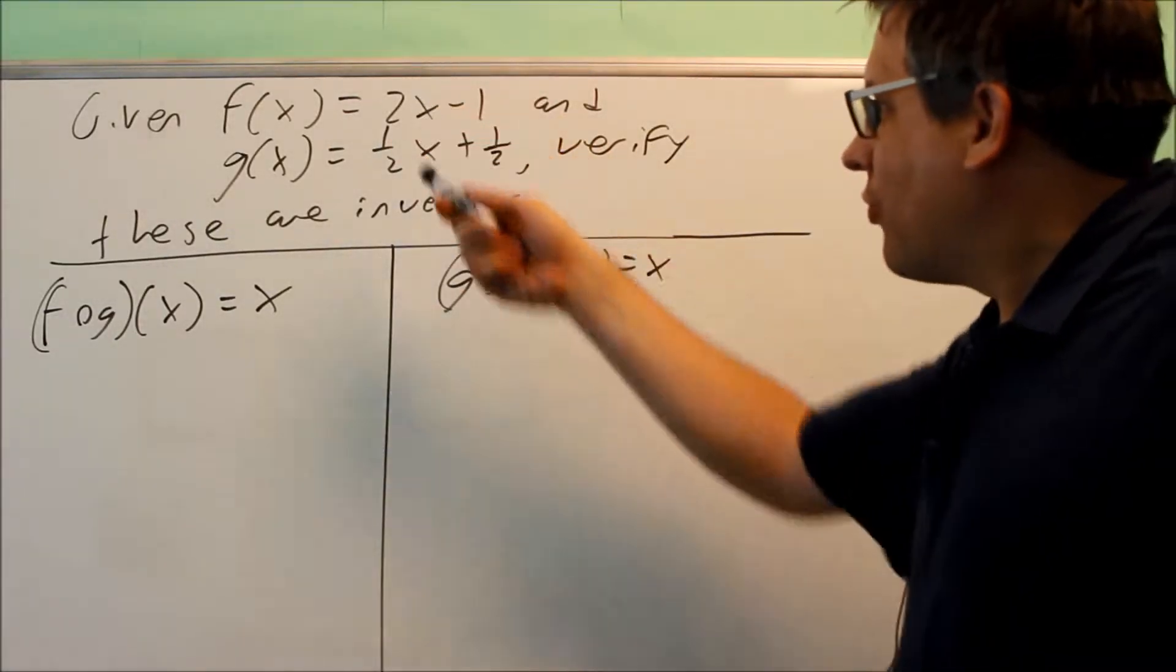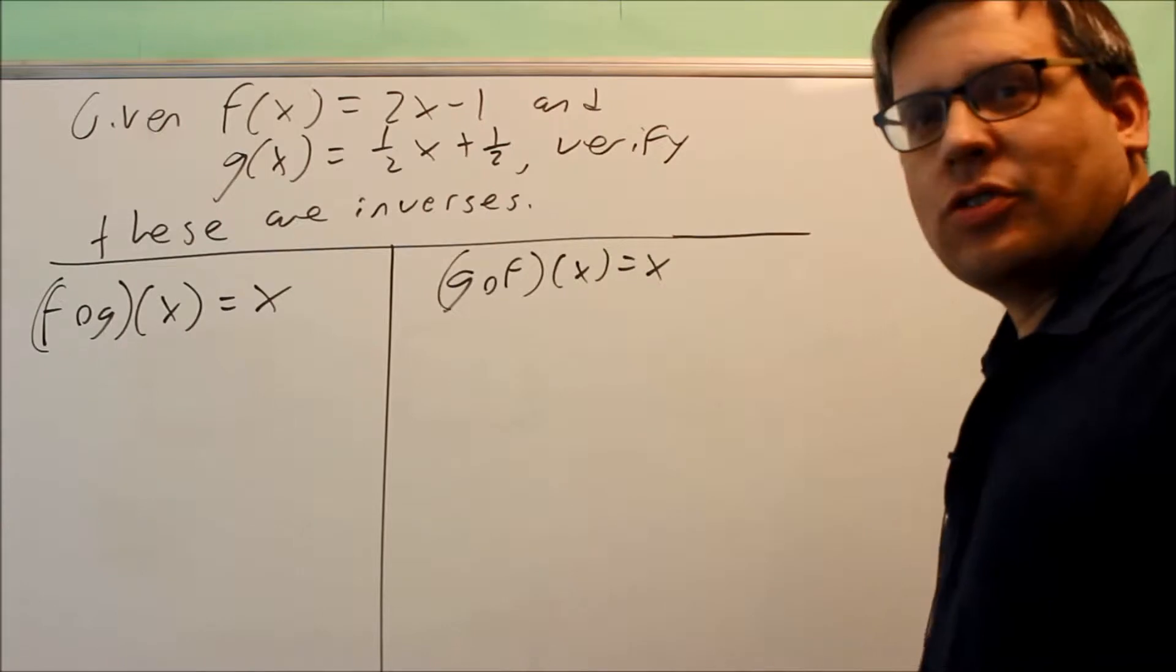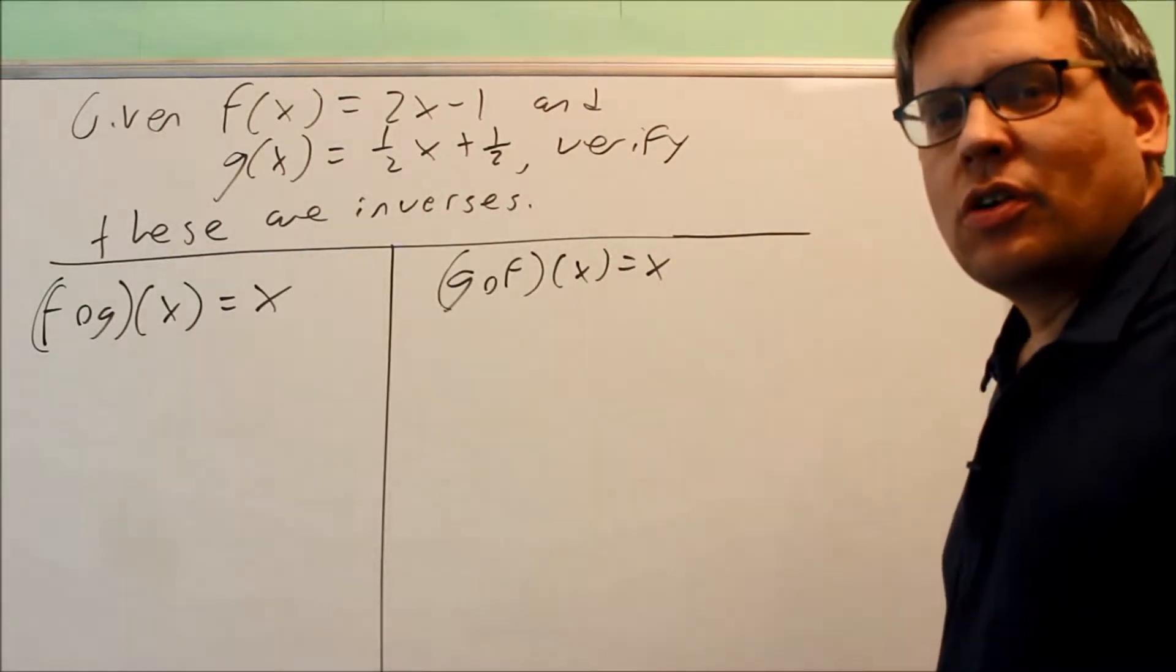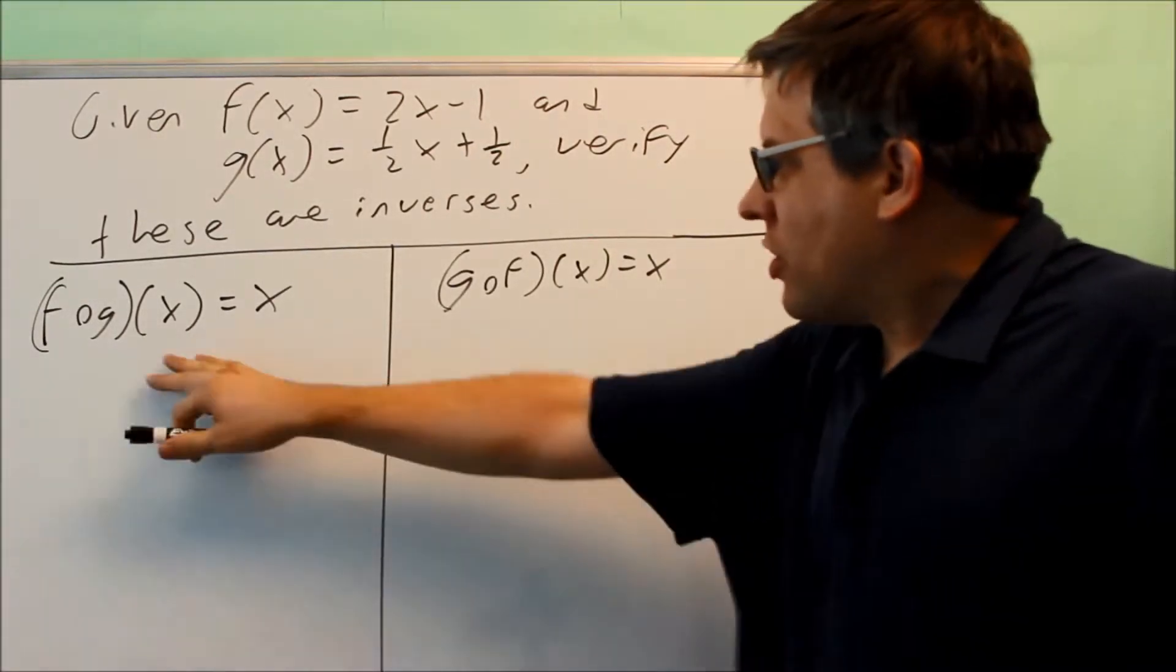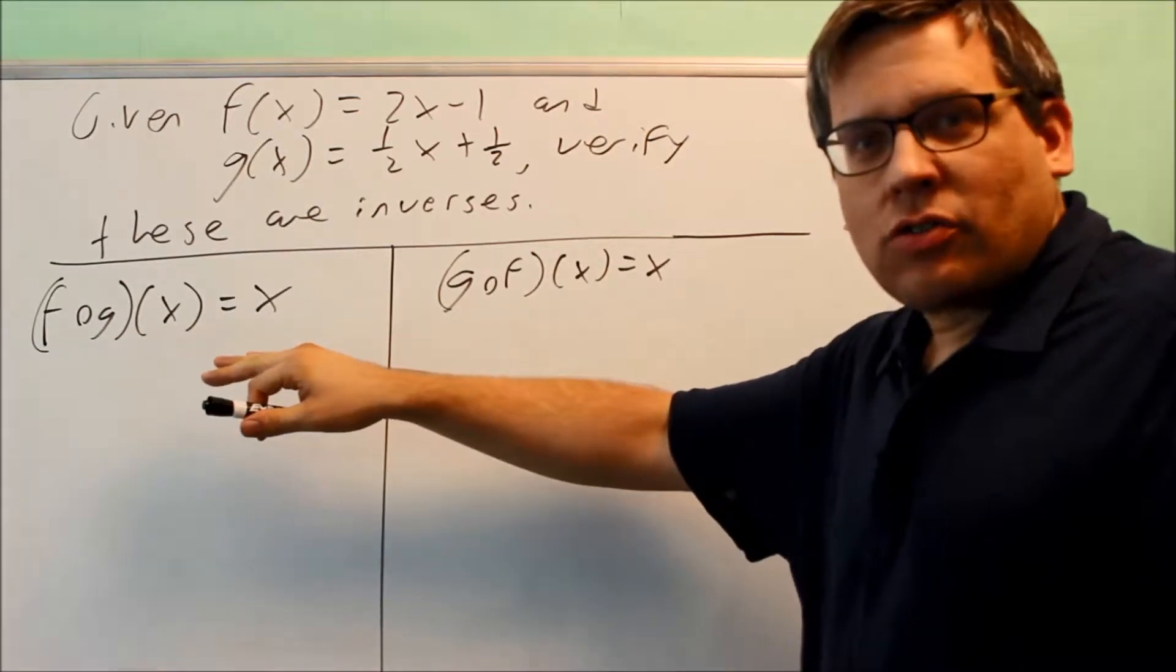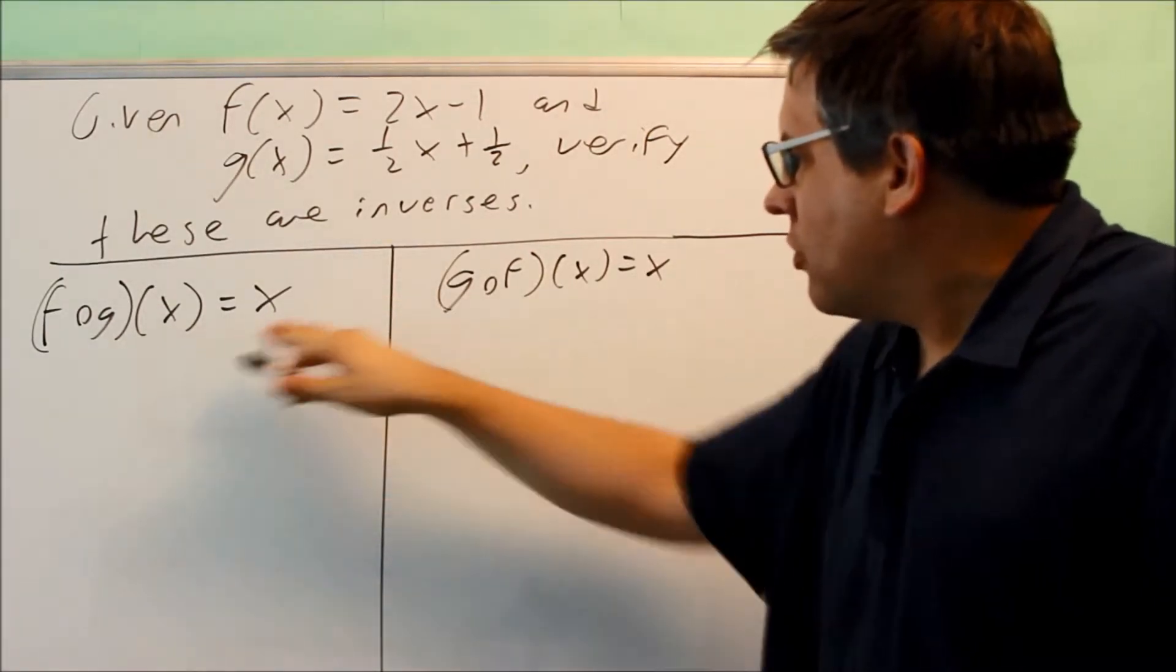We're given two functions, f and g, and what we want to do is verify that they're inverses. So, as a note, in order to show that two are inverses, you have to show this.